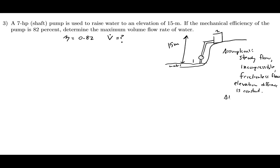We can also assume that the change in kinetic energy is zero, because the water at both points has a pretty low velocity. And we're going to say that the change in pressure is zero. The pressure at point 2 is atmospheric and the pressure at point 1 is atmospheric, so delta P equals P2 minus P1 equals zero.